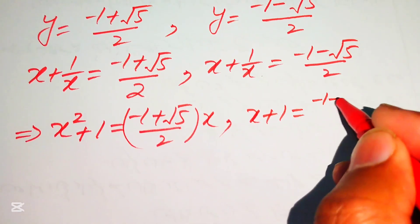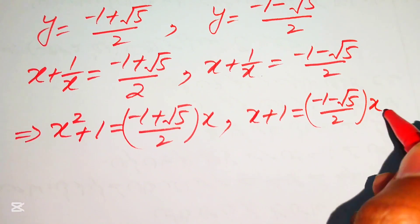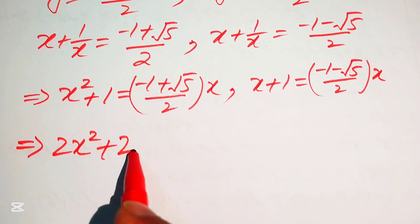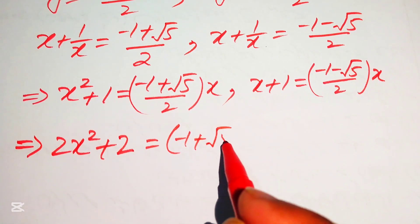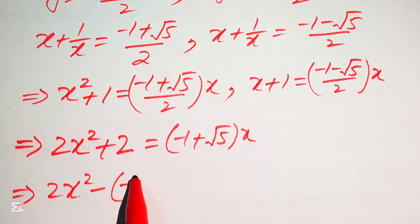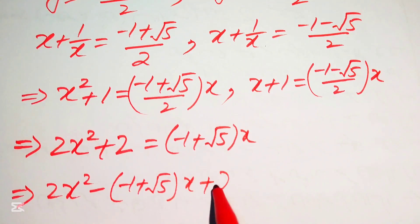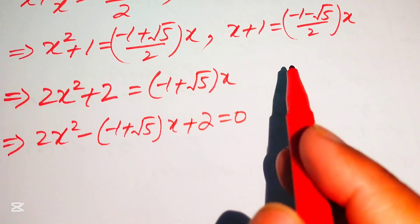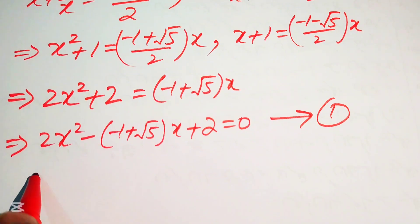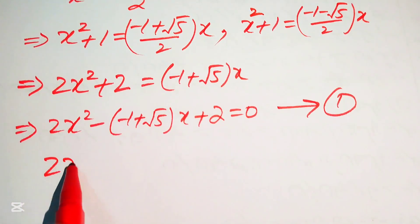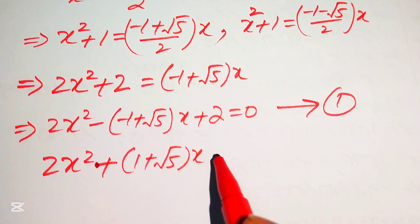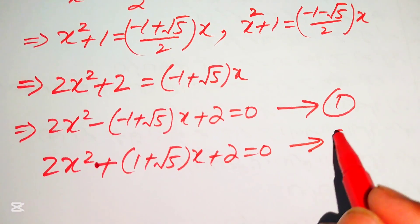Moving terms to one side gives equation 1: 2x squared minus (minus 1 plus square root of 5) times x plus 2 equals 0. Similarly for the second case, equation 2 is: 2x squared plus (1 plus square root of 5) times x plus 2 equals 0.